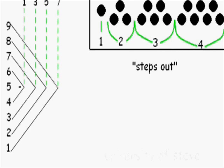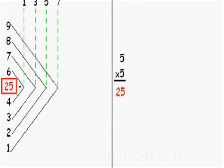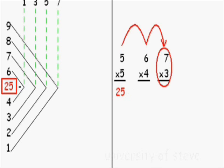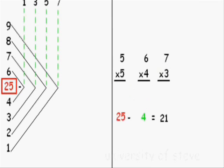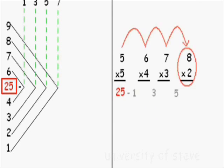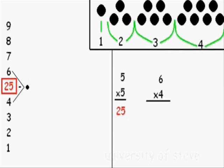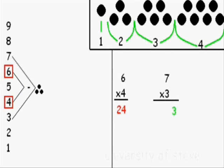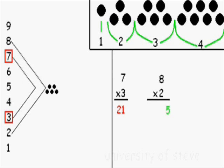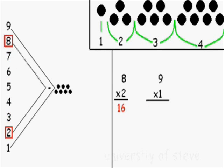Knowing this will be really handy, and all we have to know is 5 times 5. 6 times 4 is 1 step out, so it's 1 odd less than 5 times 5. 7 times 3 is 2 steps out, so it's 2 odds less than 5 times 5. 8 times 2 is 3 steps out, so it's 3 odds less than 5 times 5. 9 times 1 is 4 steps out, so it's 4 odds less than 5 times 5. Each step out corresponds to subtracting the next consecutive odd number from the step before it.